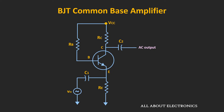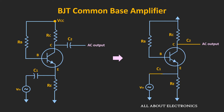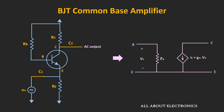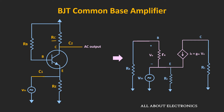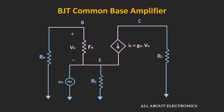For the small signal analysis, or the AC analysis, we will consider all the DC sources in the circuit as zero, and we will replace the coupling capacitors by the short circuit. Then we will replace the BJT by the small signal model. If you see over here, this emitter resistor is connected between the emitter and the ground terminal. The input signal is also applied between the emitter and the ground terminal. The base resistor RB is connected between the base and the ground terminal, while this resistor RC is connected between the collector and the ground terminal. This is the AC equivalent circuit of the common base amplifier, and using this circuit let's find out the voltage gain, the input impedance and the output impedance.